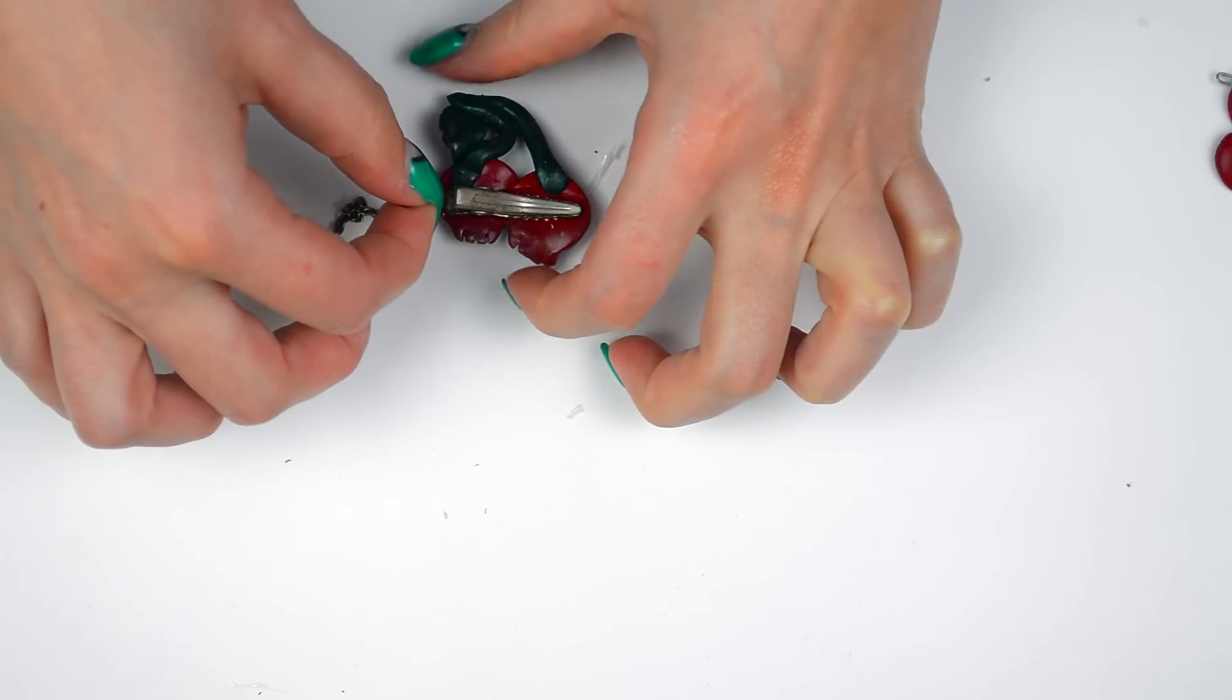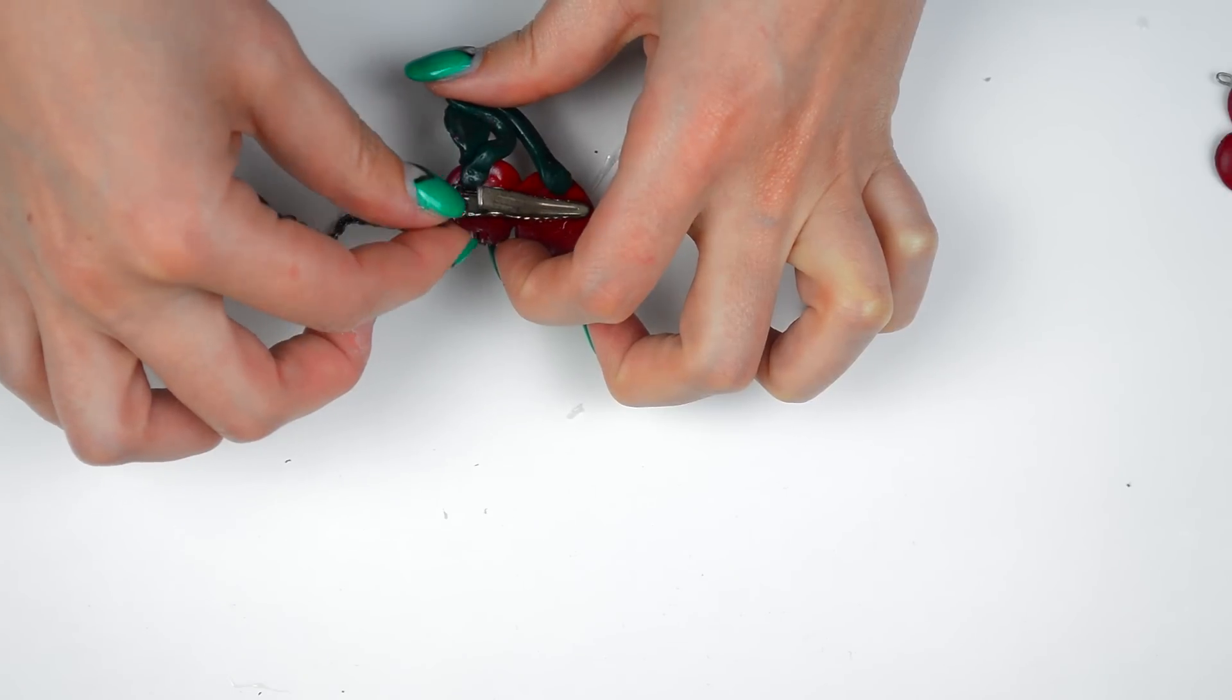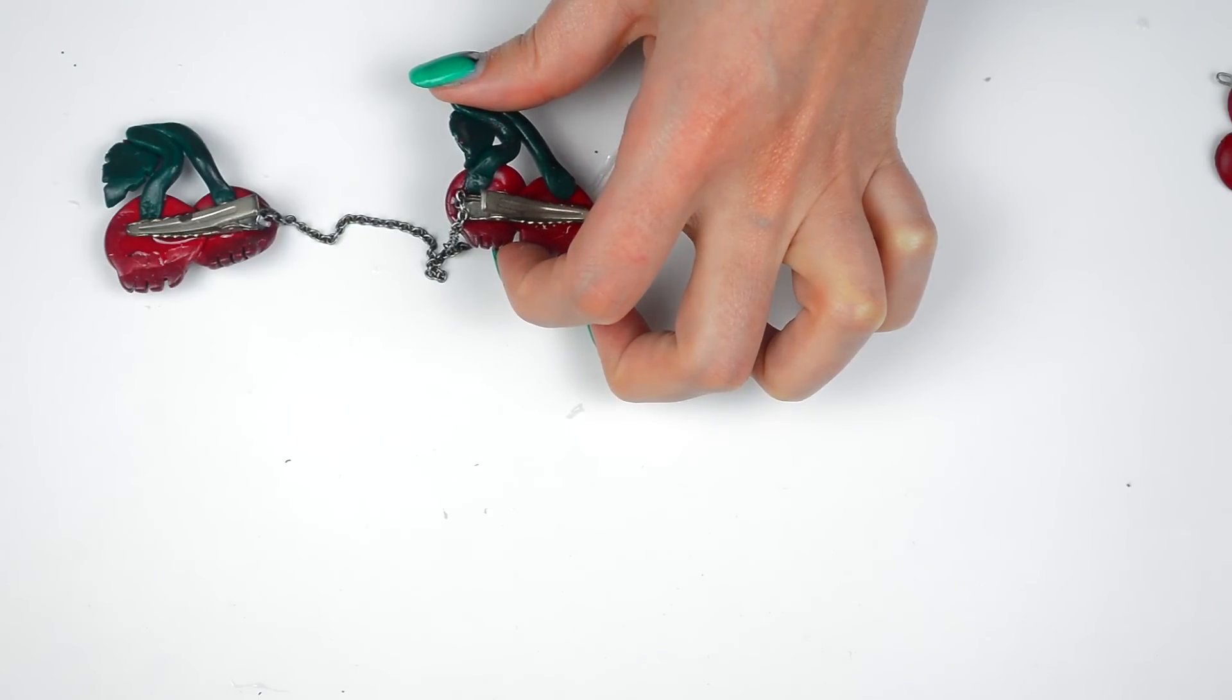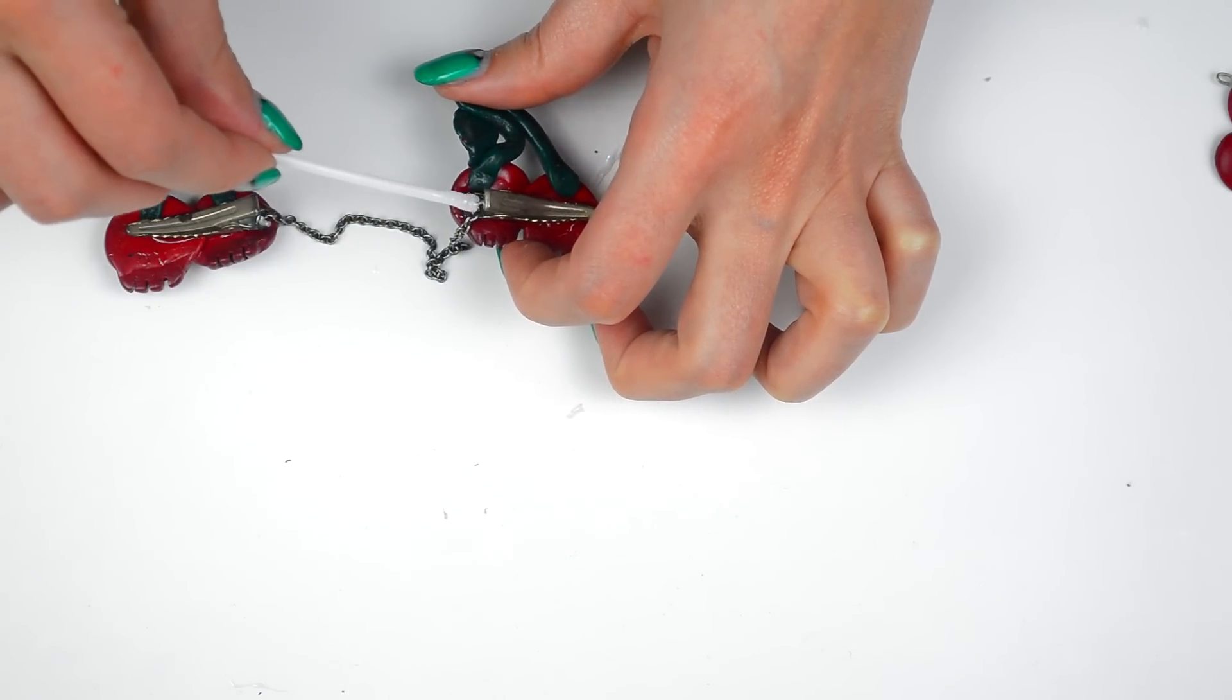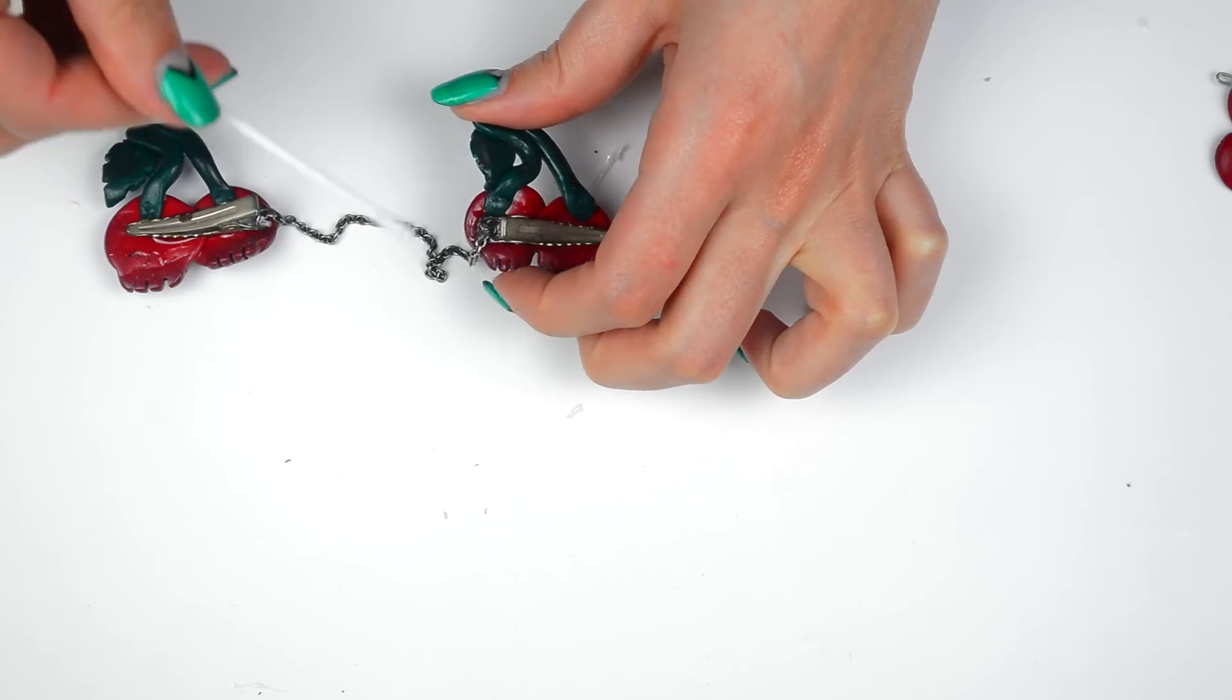Turn them into collar pins by gluing clips on the back and a small chain piece on either side with some strong glue. I used epoxy, but I guess E6000 would be okay.